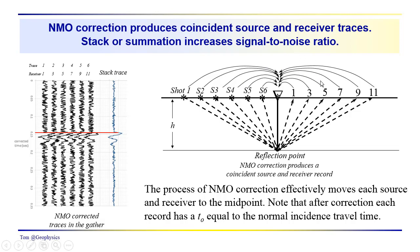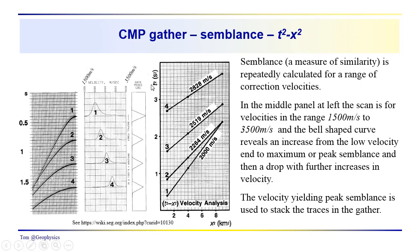So again, all these sources and receivers are grouped together here at this midpoint. And then sum together to get the stack trace, which gives us a single event coming in at the T0 2H over V time. Okay.